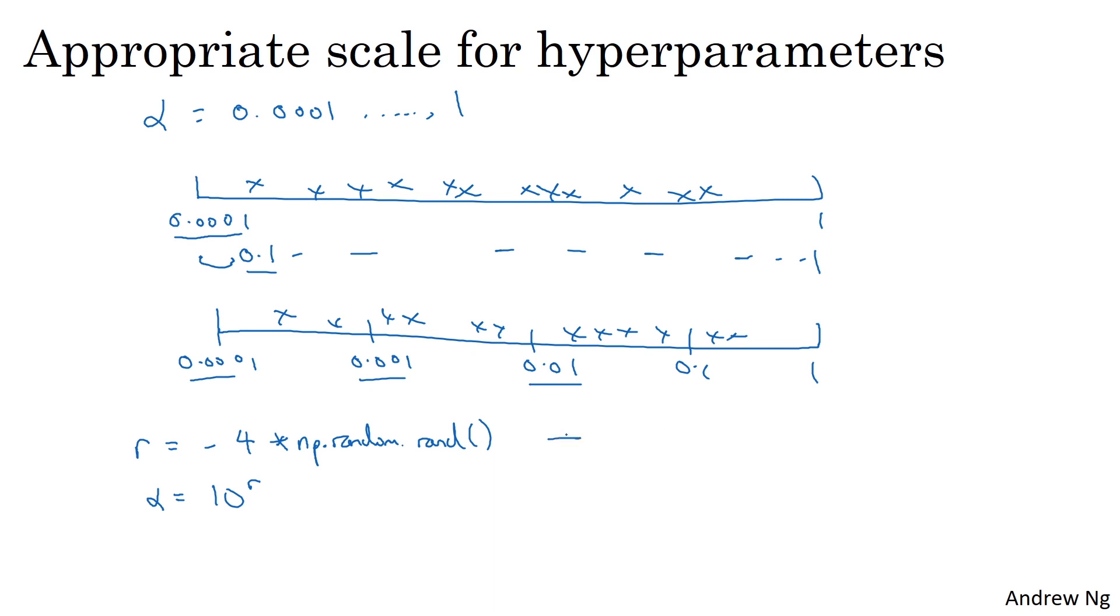So after this first line, r will be a random number between minus 4 and 0. And so alpha here would be between 10 to the minus 4 and 10 to the 0. So 10 to the minus 4 is this left value, this 10 to the minus 4, and 1 is 10 to the 0.